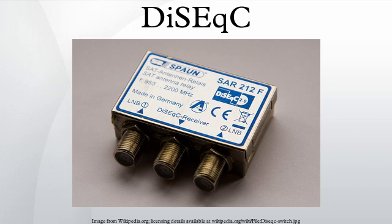The maximum dish size that can generally be used with a DiSEqC motor is 1.2 m. However, using a V-box as an interface, DiSEqC 1.2 can be used for very large dishes using 36V motors.